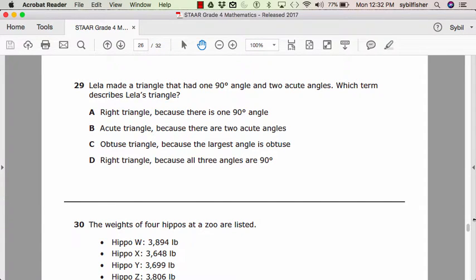Number 29. Leela made a triangle that had one 90 degree angle and two acute angles. Which term describes Leela's triangle? Right triangle because there is one 90 degree angle. B, acute triangle because there are two acute angles. Obtuse triangle because the largest angle is obtuse. D, right triangle because all three angles are 90 degrees.